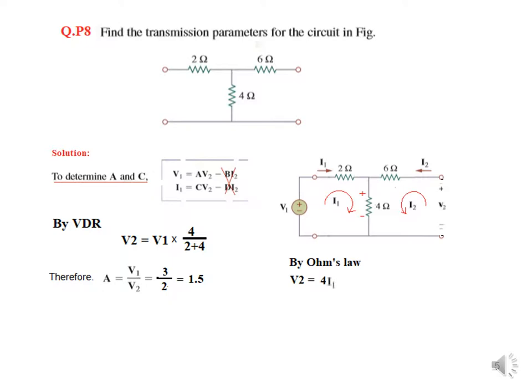The next parameter to find is C, which is the ratio of I1 to V2. Since I2 is zero, by Ohm's law V2 equals 4 times I1. Therefore, C equals I1 divided by V2, which gives 1 over 4 siemens. Since it is current divided by voltage, it is admittance, and its unit is siemens — so C equals 0.25 siemens or 250 millisiemens.